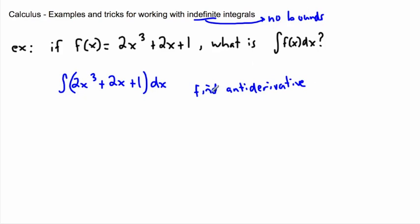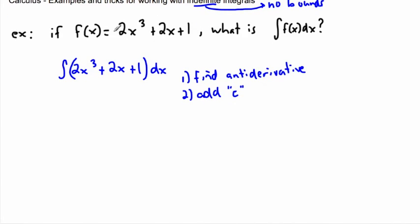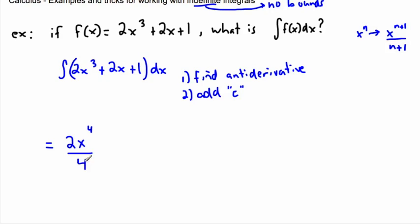For indefinite integrals, step one is find the anti-derivative, and step two is add a constant C. This example uses polynomials, which lets us see how to handle multiple terms. Remember the trick: the anti-derivative of x^n is x^(n+1) / (n+1). So for 2x³, the 2 just hangs out, and x³ becomes x^4 / 4. That's the first part.